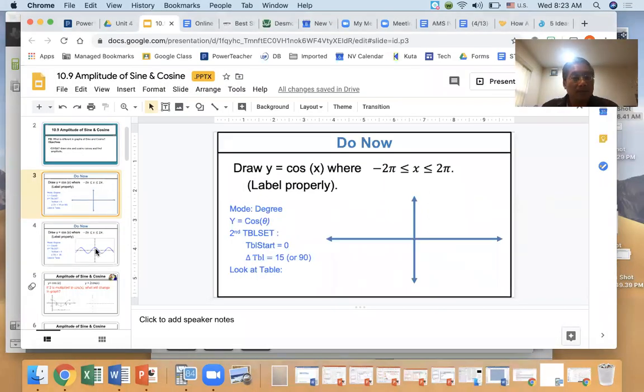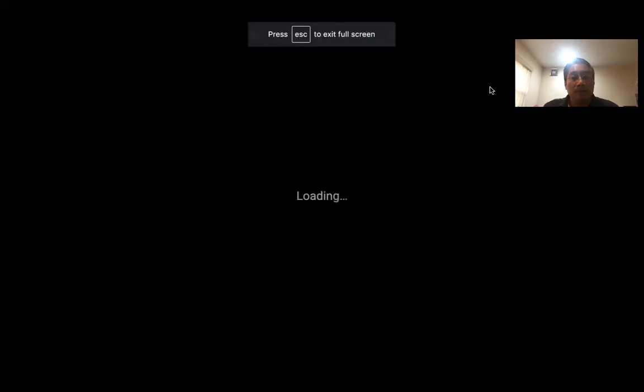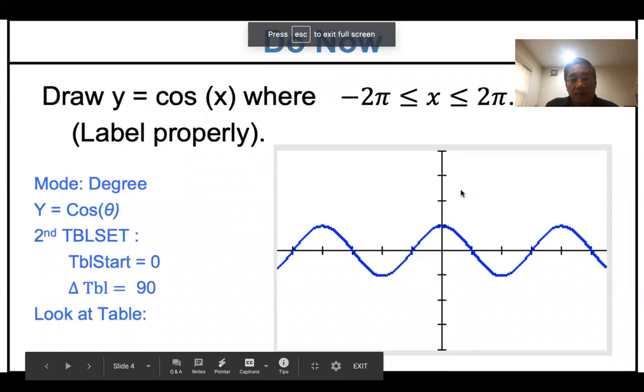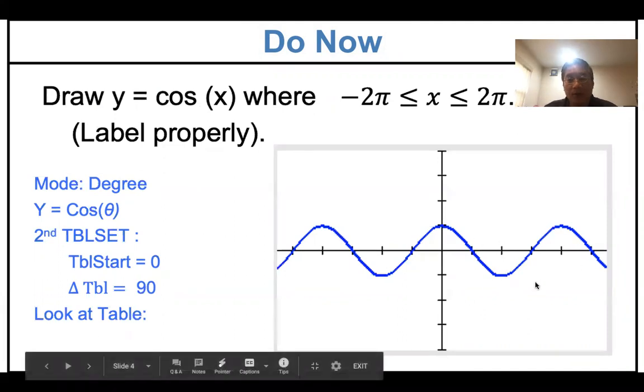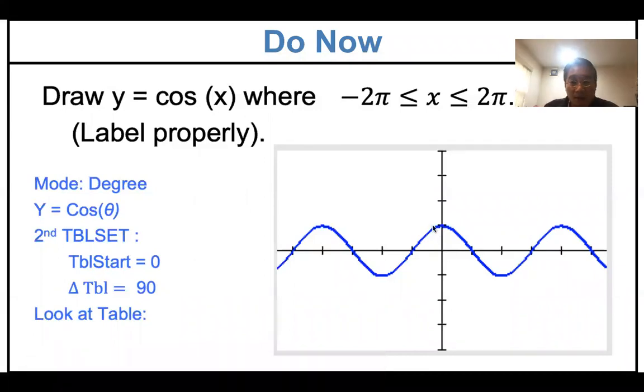All right. So you have this graph. You are going to draw from here to here. And make sure you label properly: negative 2π, negative π, here's zero, π, 2π. Here's π/2, 3π/2, like this. And y values: one, negative one. You need to label properly.